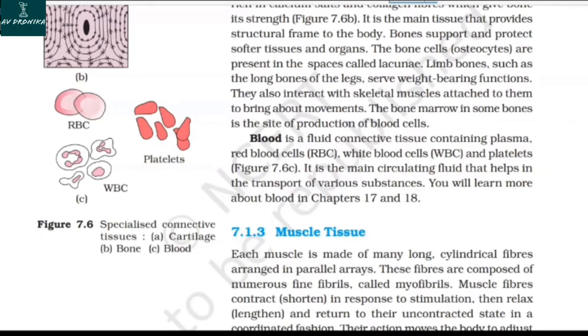Blood is a fluid connective tissue containing plasma, red blood cells (RBC), white blood cells (WBC), and platelets. It is the main circulating fluid that helps in the transport of various substances. You will learn more about blood in chapters 17 and 18.